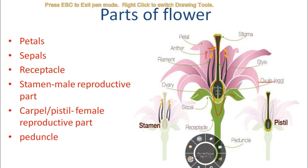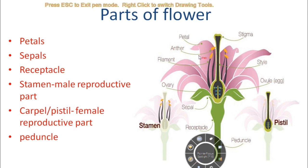What happens at the time of fertilization is that the pollen grains from the anther reach the stigma via different agents like insects, water, and wind. Then a pollen tube forms, which goes through the style and reaches the ovary to meet the ovule, and fertilization takes place.